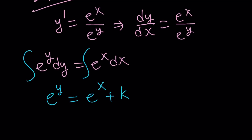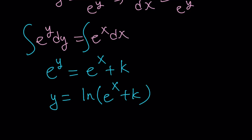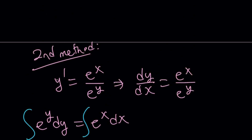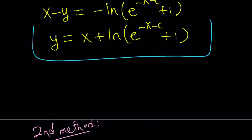If you integrate e to the power y dy, you get e to the power y. The right-hand side gives you e to the power x. Let's add a constant k. Now we can take ln of both sides and solve for y. And y is going to become ln of (e to the power x plus k). You might say — that's not the same answer as before. How come we got a different answer?